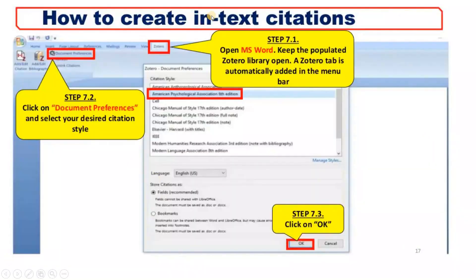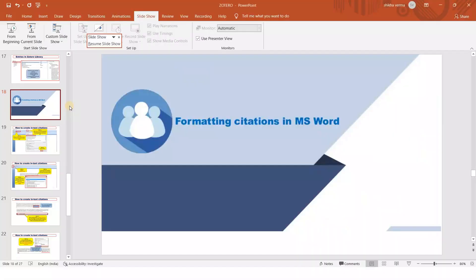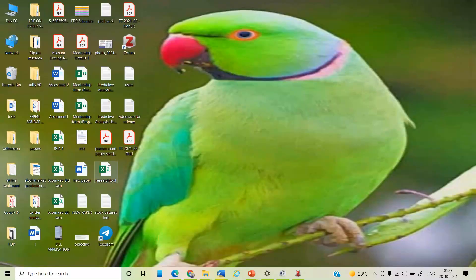As you can see in this image, the Zotero link appears in MS Word, with options for add and edit citations, bibliography, and document preferences. Let me show you what my MS Word currently looks like.